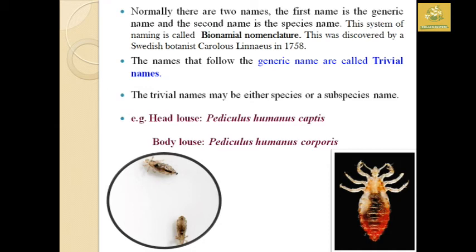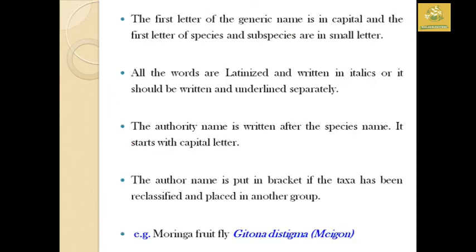The names that follow the generic name are called infraspecific names, which may be a species or subspecies name. For example, head lice are Pediculus humanus capitis and body lice are Pediculus humanus corporis. The first letter of the generic name is always capitalized, while the first letter of the species and subspecies names are always small. All words are latinized and written in italics or underlined. The authority name is written after the species name, starting with a capital letter, and is placed in brackets if the taxon has been reclassified.